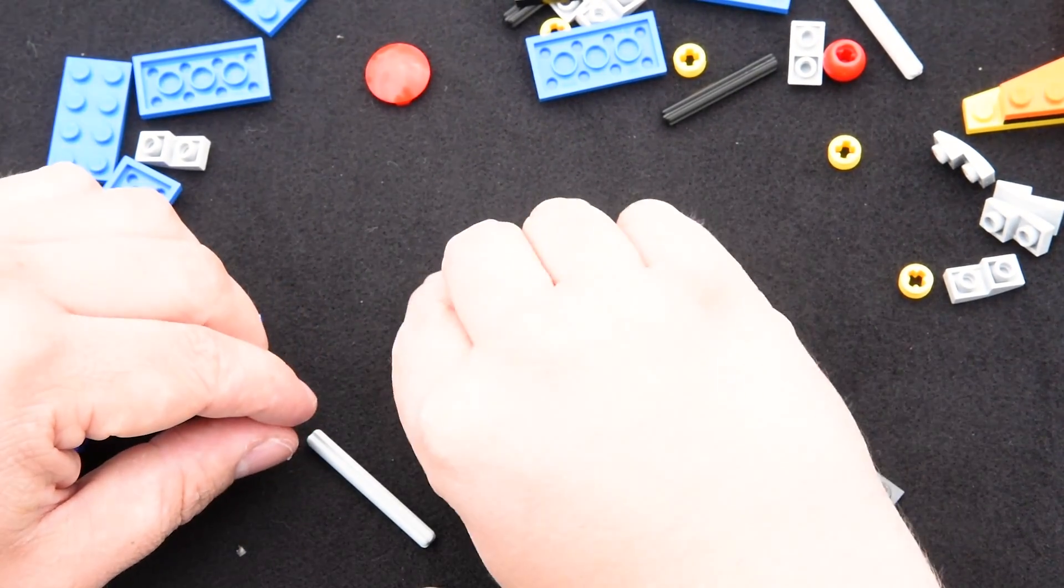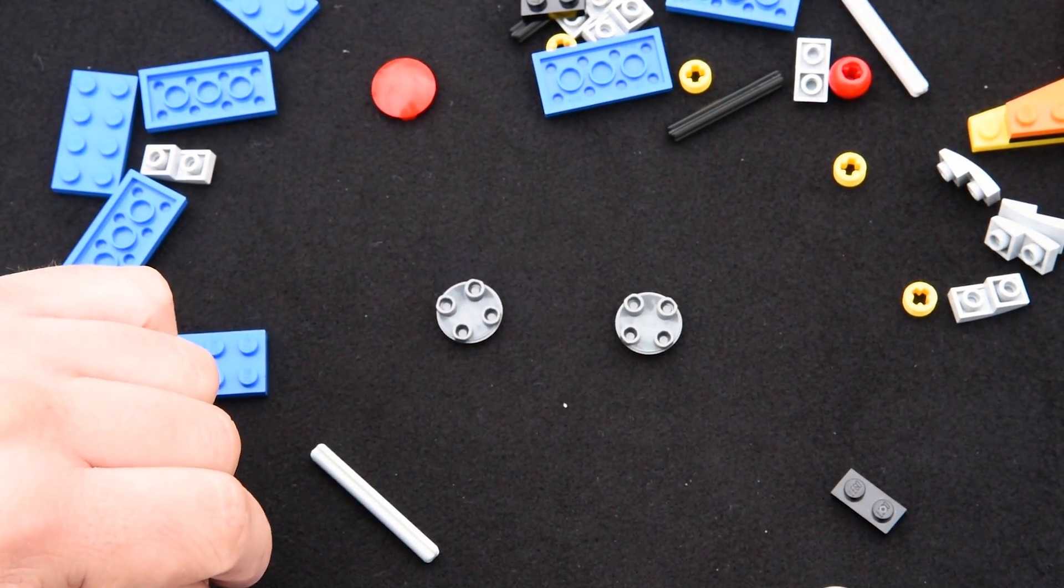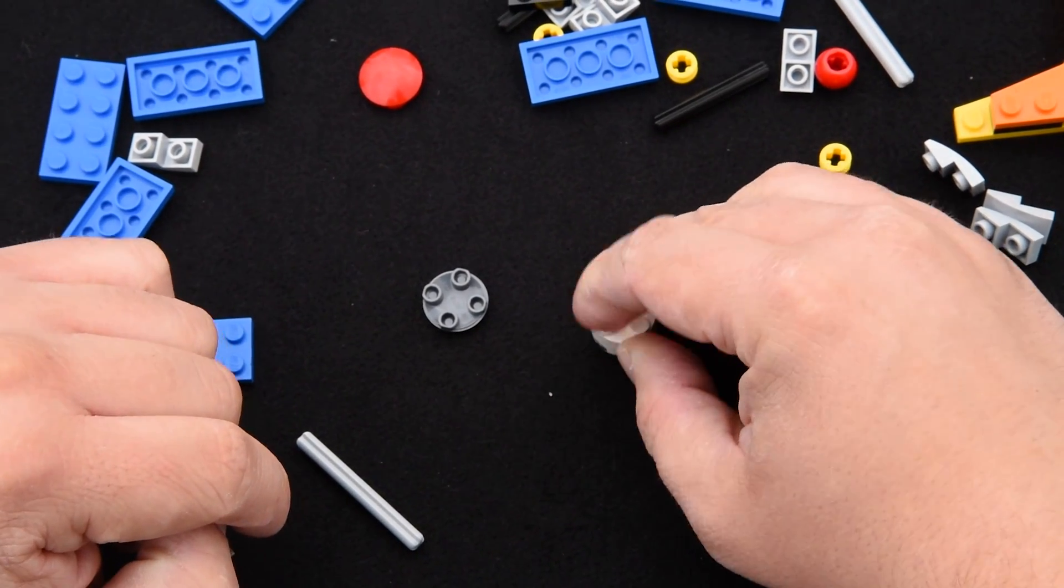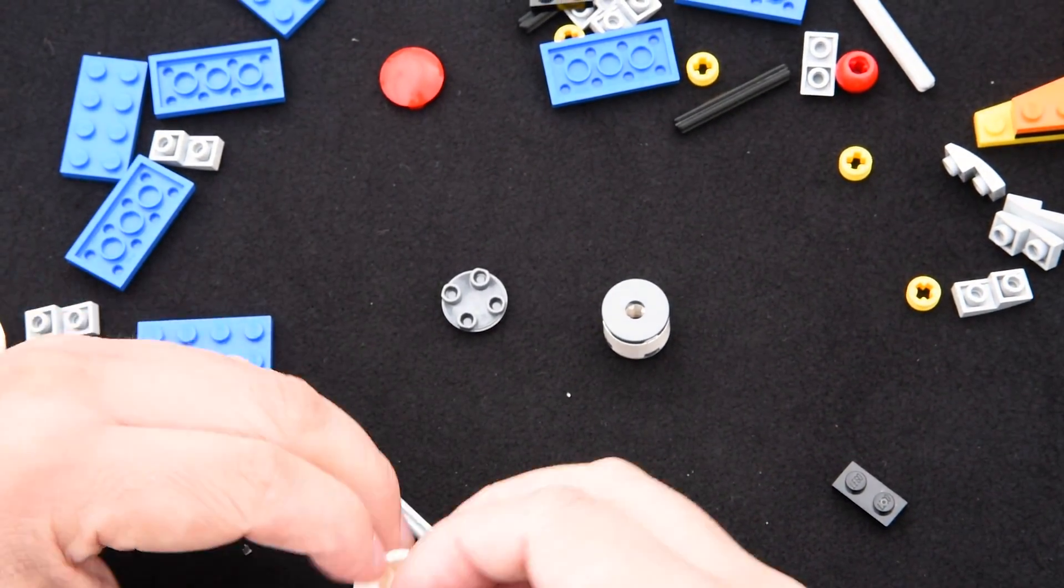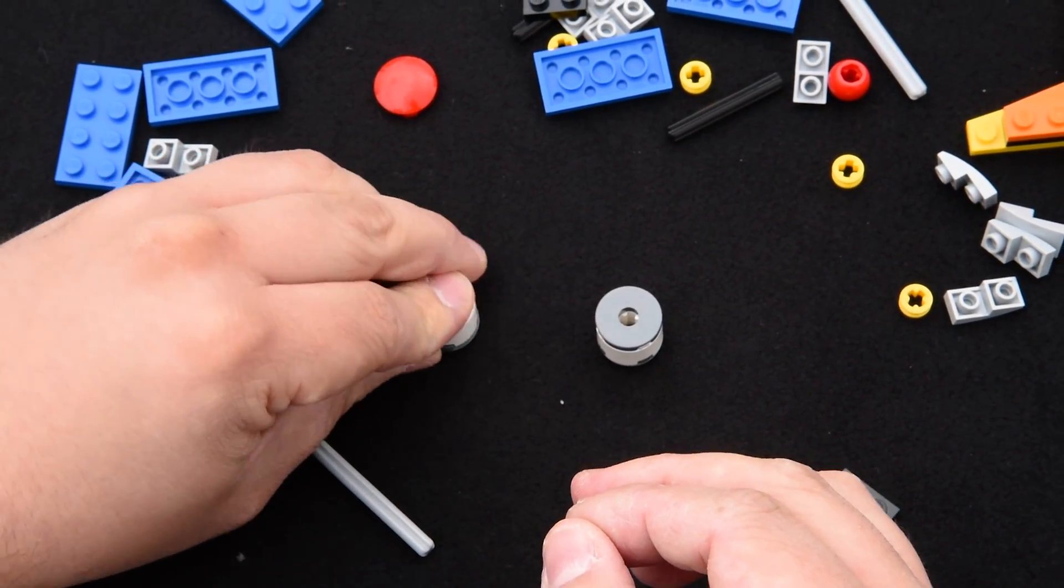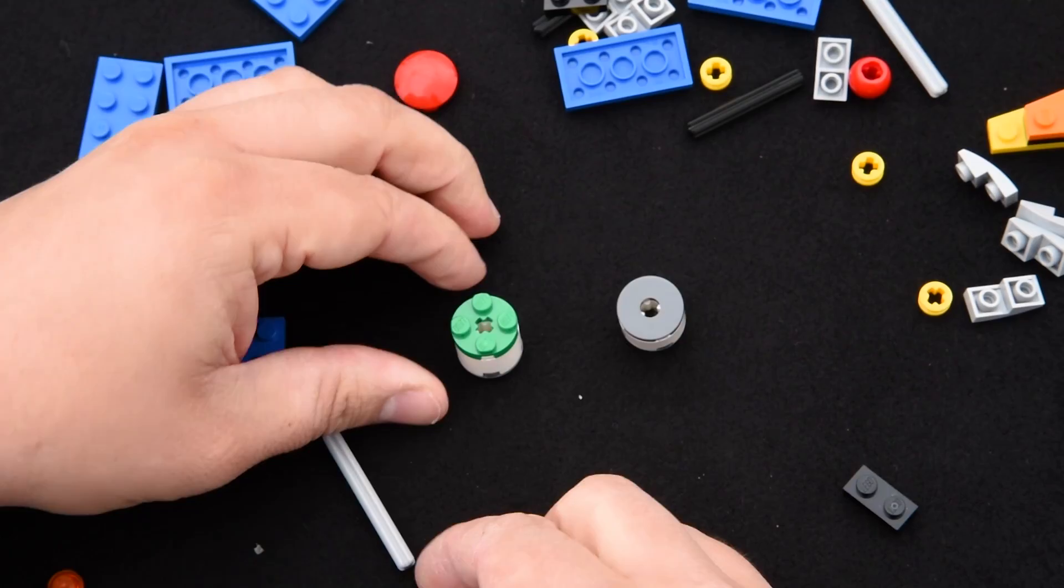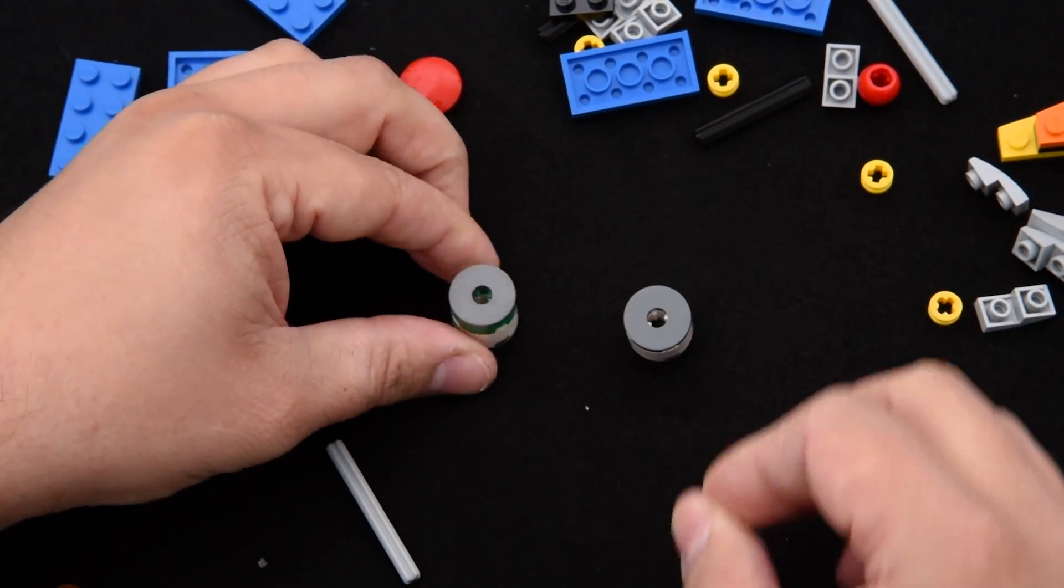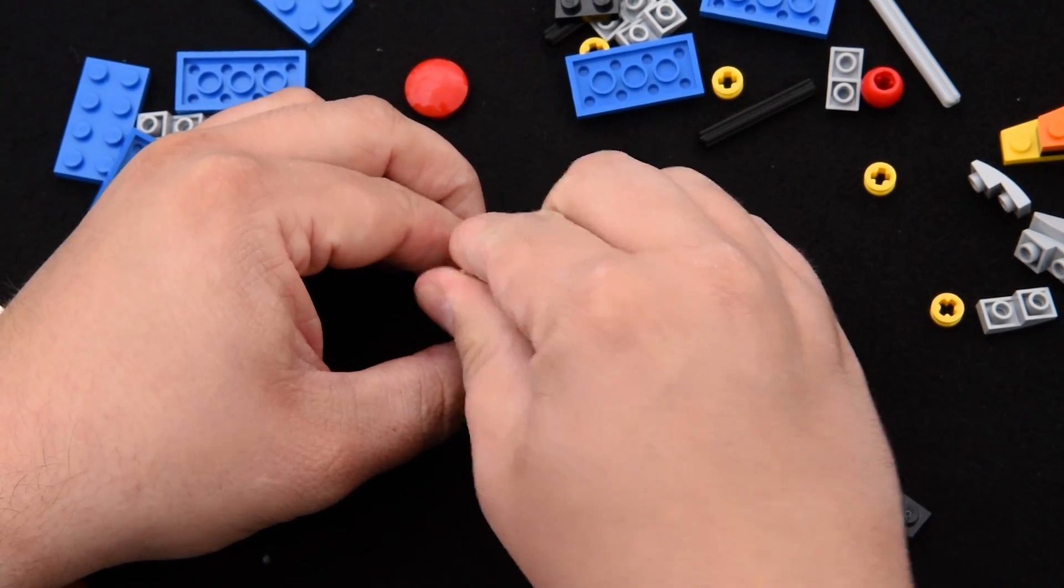And then we're going to build this part here we've got with these two here and we put a white one on top and the grey one here. And on this one we're going to do a white one and then a green one and then a grey one like this. And then we'll take this cross axle and we just put it in there.